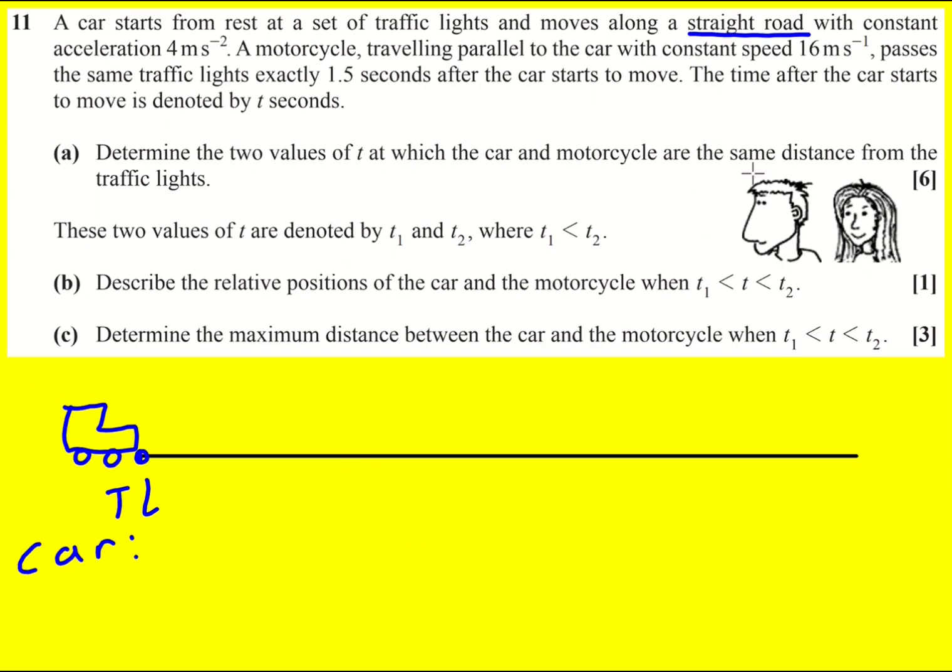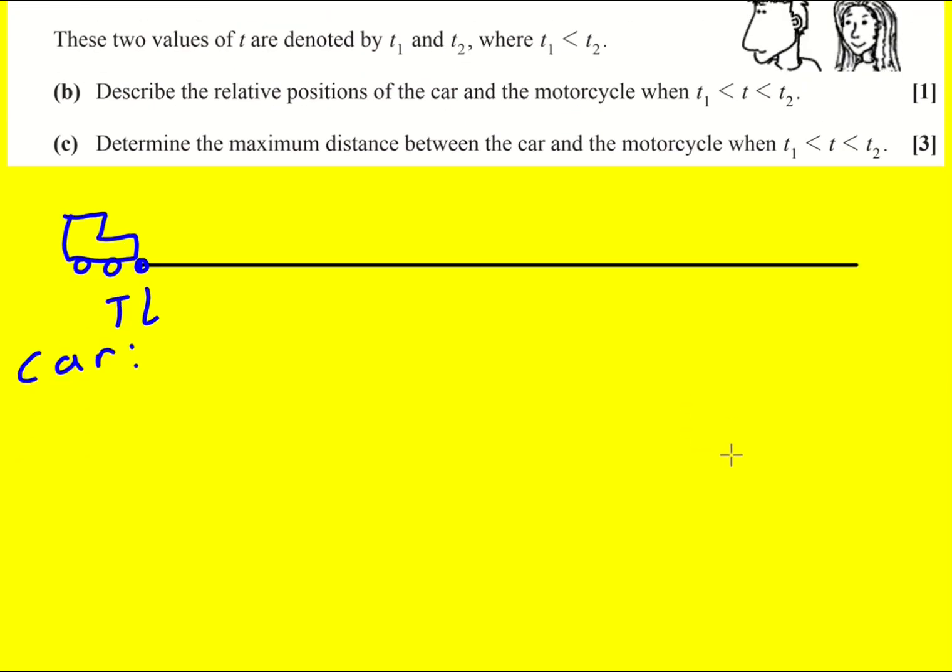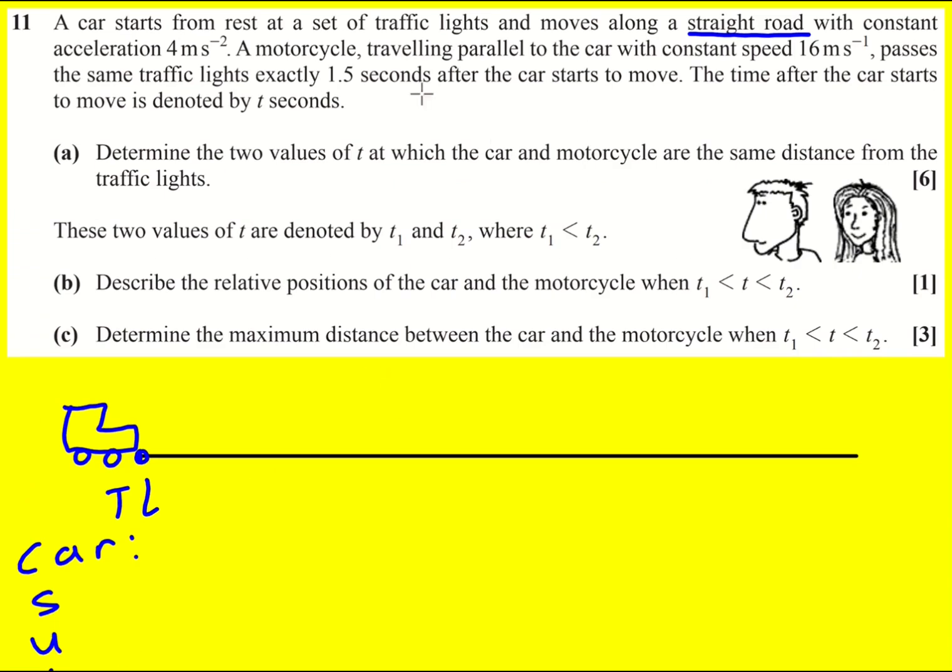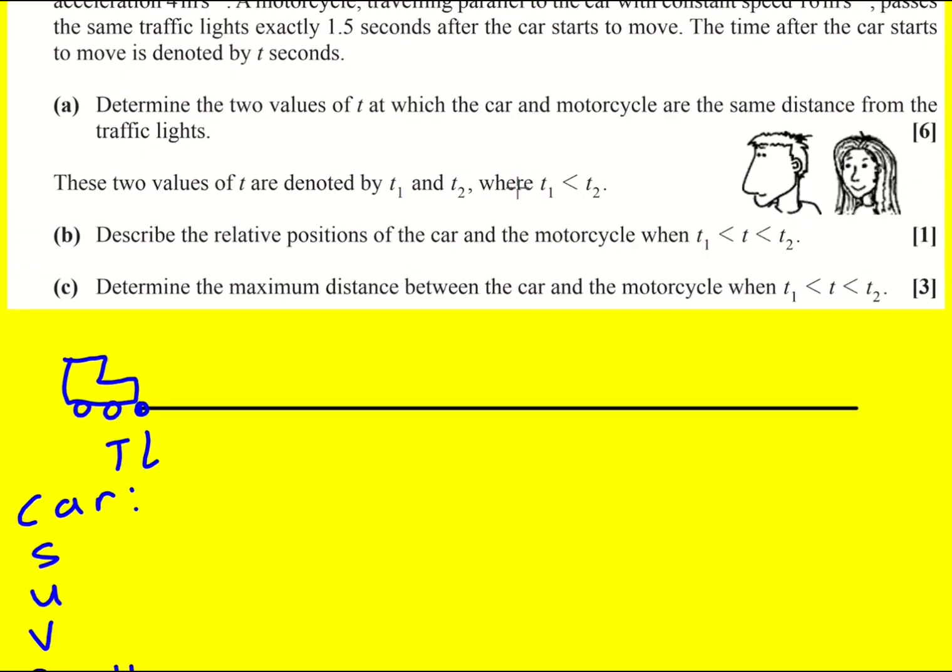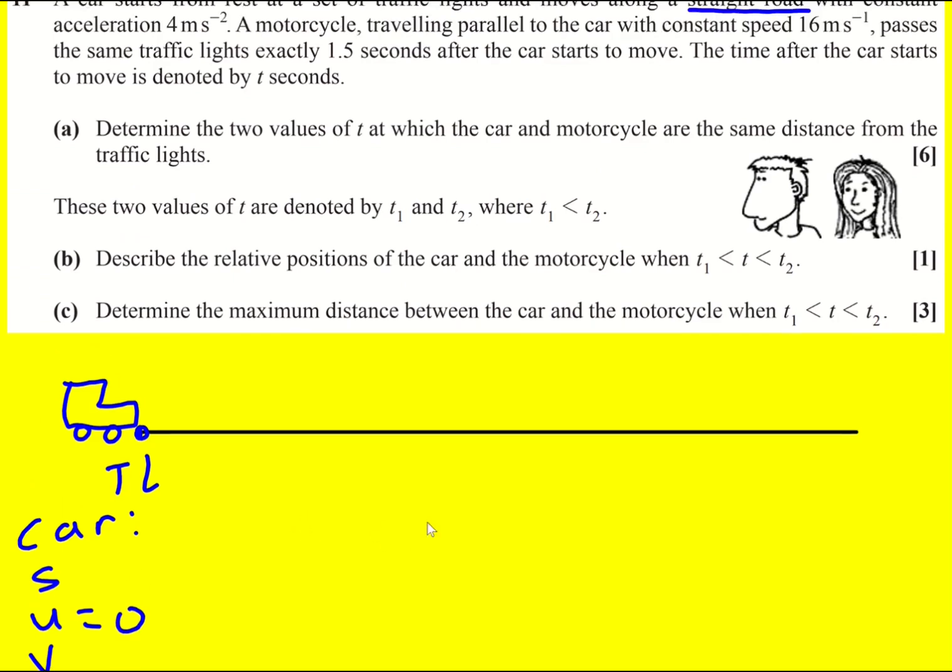And I'm told a few things. I'm told that the car moves along with constant acceleration 4 meters per second squared. So we're going to be using SUVAT here. I don't really know what time interval I'm looking at at the moment, but I can put that information in. And it also has initial velocity 0.